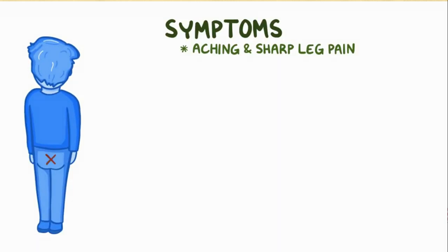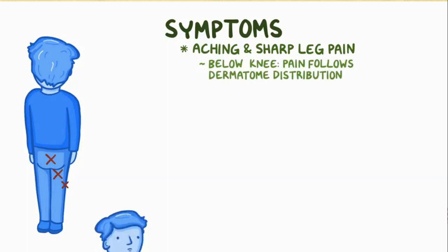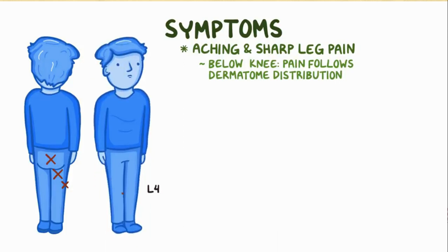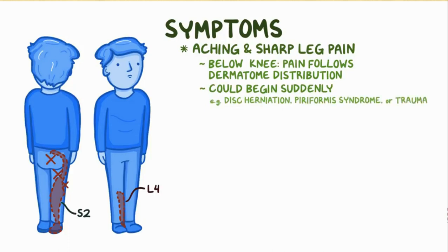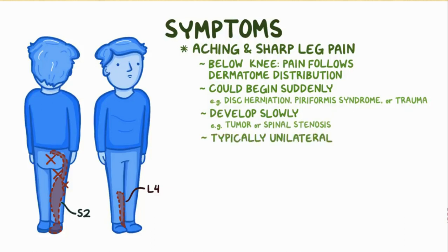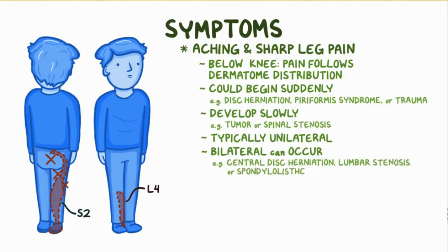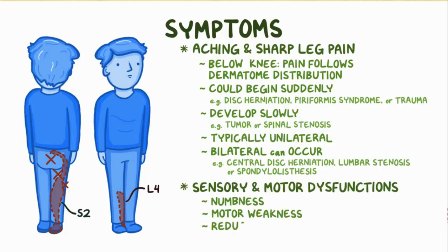In sciatica, the main symptom is aching and sharp leg pain radiating along the middle or lower buttock and on the back or outer side of the thigh. Below the knee, pain usually follows dermatome distribution — for example, L4 nerve root compression causes pain along the medial side of the leg, while S2 compression causes pain along the back of the leg. This pain can begin suddenly with disc herniation, piriformis syndrome, or trauma, or develop slowly with a tumor or spinal stenosis. Sciatic pain is typically unilateral, though bilateral sciatica can occur with central disc herniation, lumbar stenosis, or spondylolisthesis.